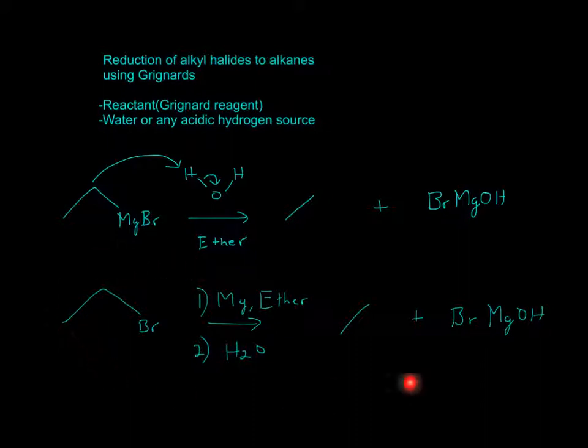This is what the final thing would look like, but this is the actual mechanism where it attacks a hydrogen, forms an alkane, and the electrons go to Mg and then form a bond with OH to become BrMgOH. I hope that helped, and thanks for watching.